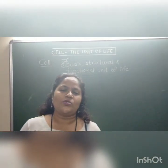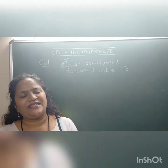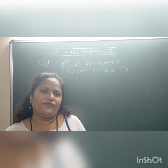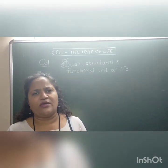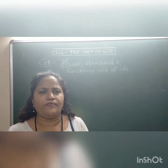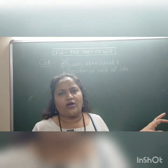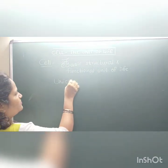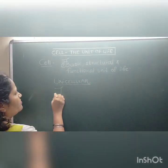Now the question is why do we define it so? All living organisms are fundamentally, basically made up of cells. Definitely the number of cells can differ from one organism to another. Depending on this, we can classify the living organisms into two categories as unicellular and multicellular.